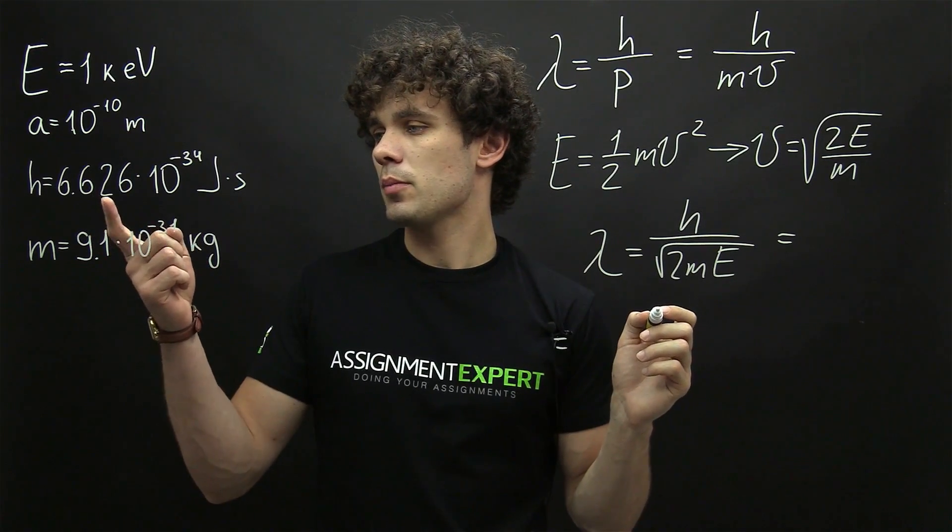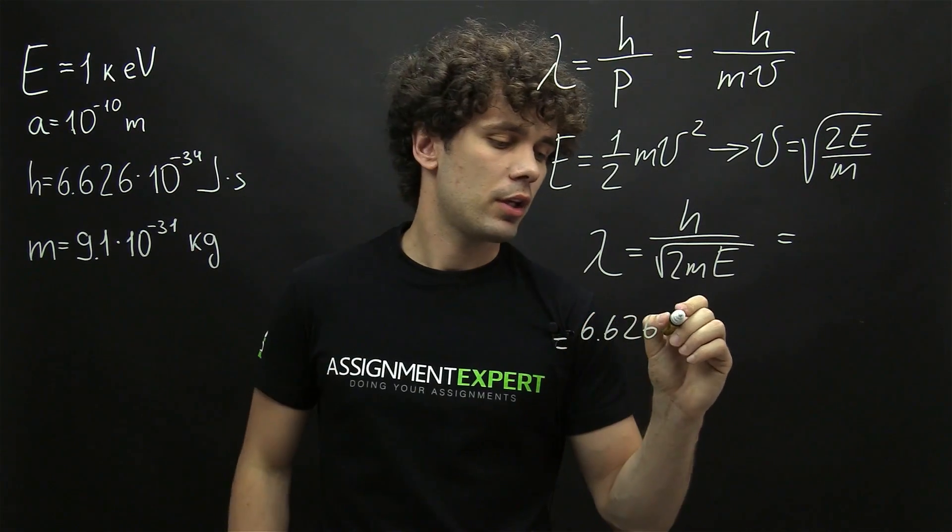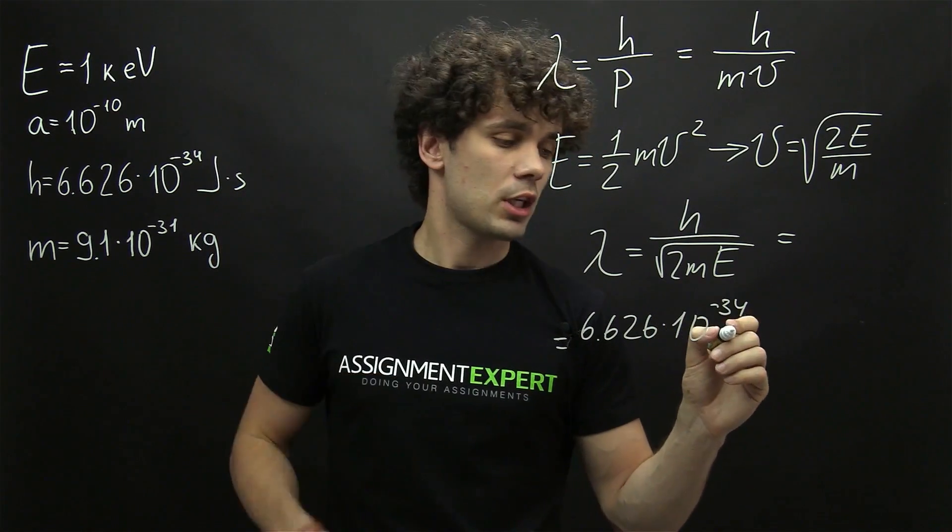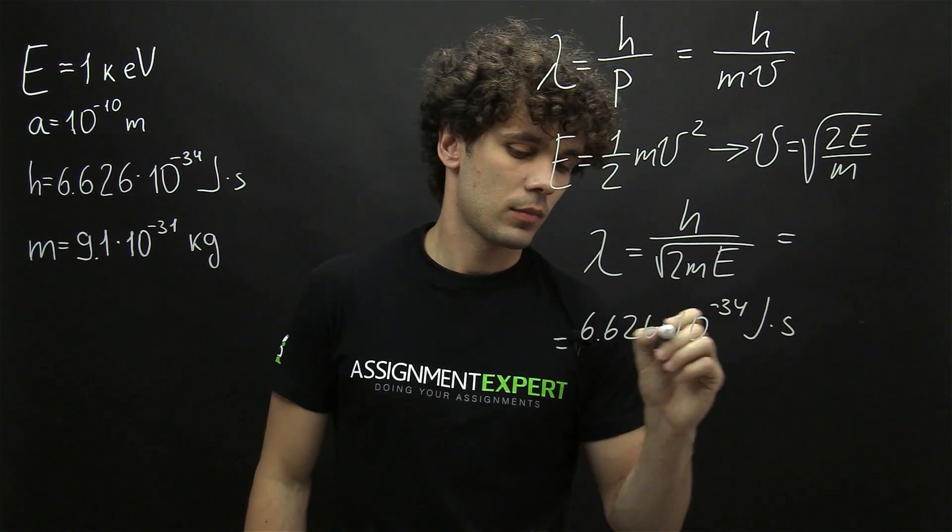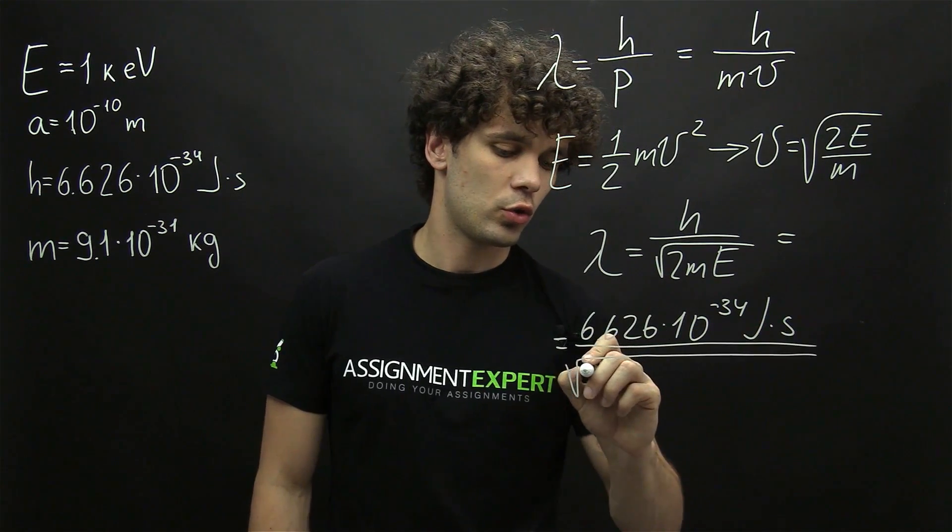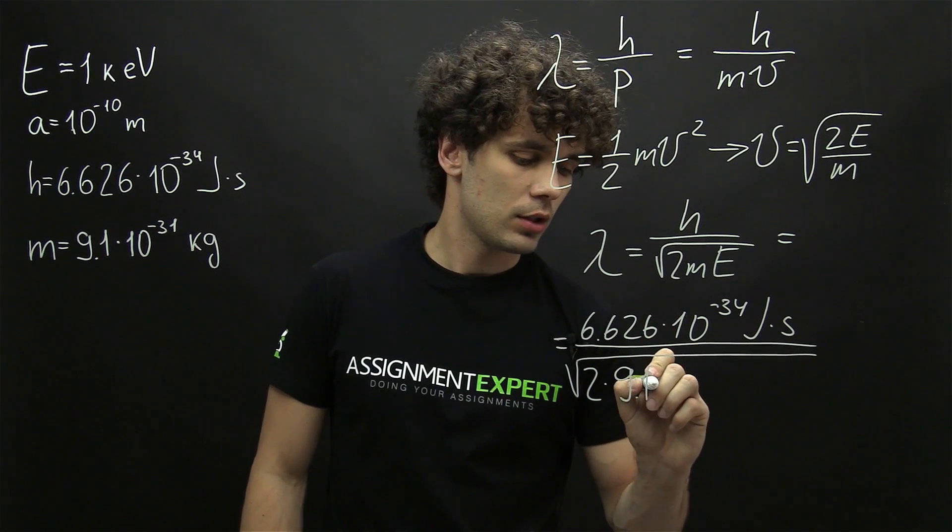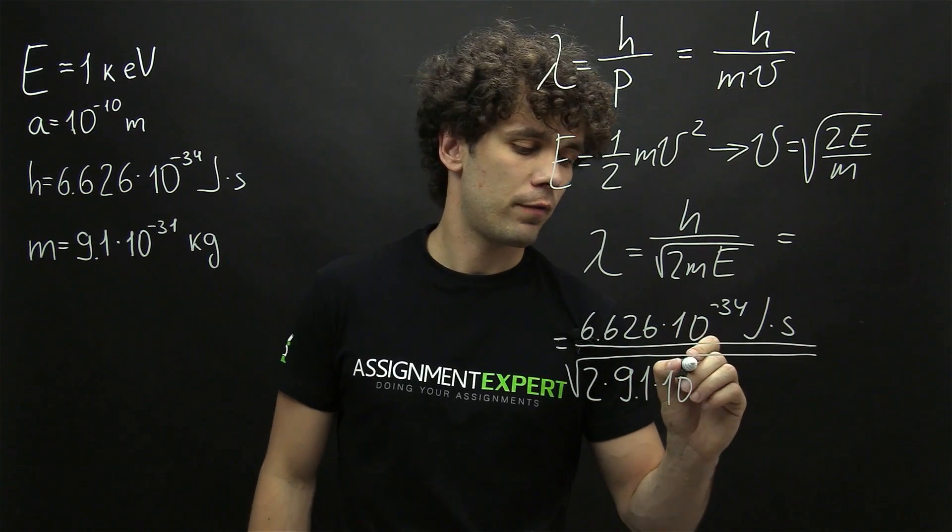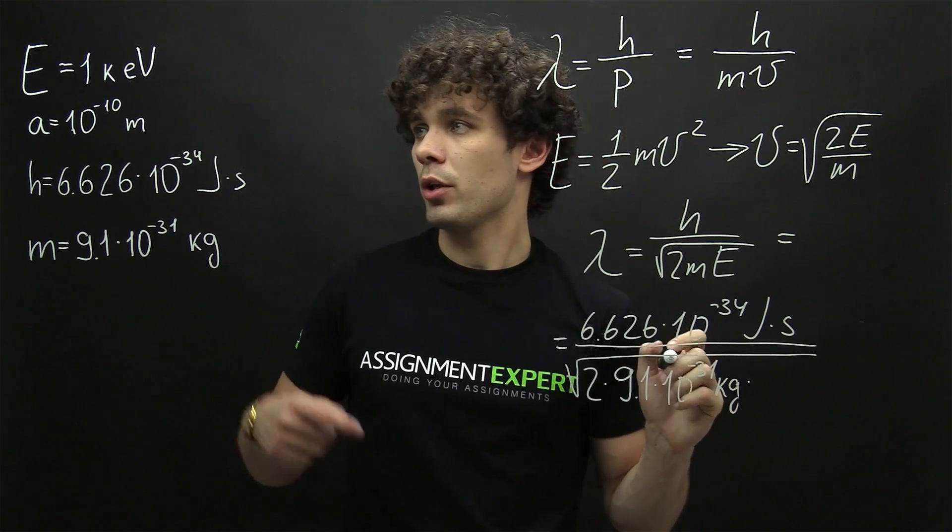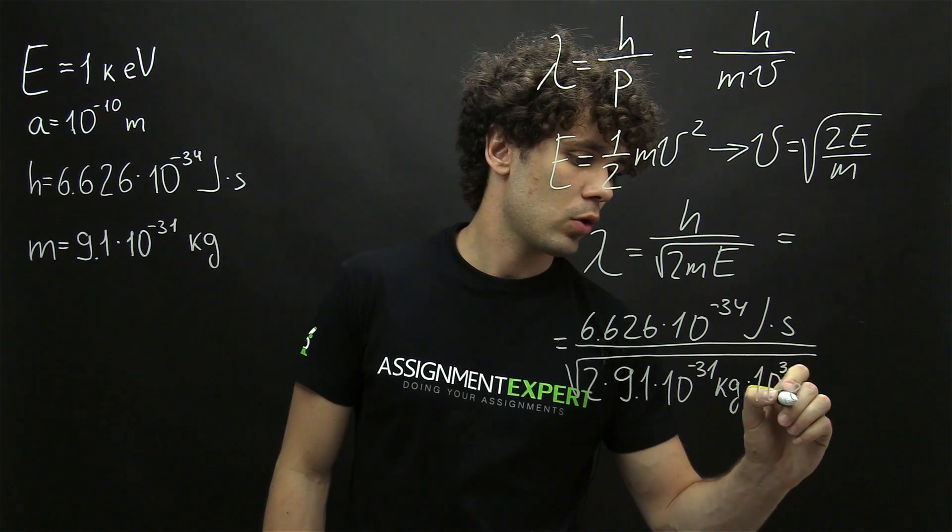In the numerator we have 6.626 times 10 raised to the negative 34th joules times second. And in the denominator we have the square root of 2 times 9.1 times 10 raised to the negative 31st kilograms. Then we have 1 kilo electron volt, which is 10 raised to the third power electron volts.